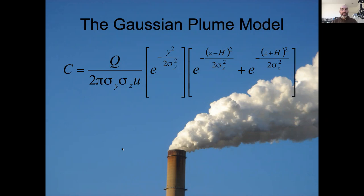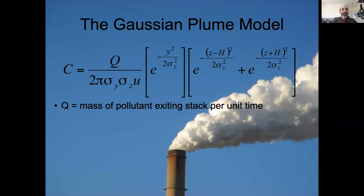So first, the diffusion model had a single mass that was emitted at a single point in time. In the Gaussian plume model, we now have a continual amount of mass emitted over time, and so taking the place of a single mass is Q, the mass of pollutant exiting per unit time.